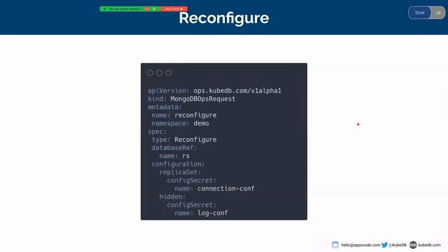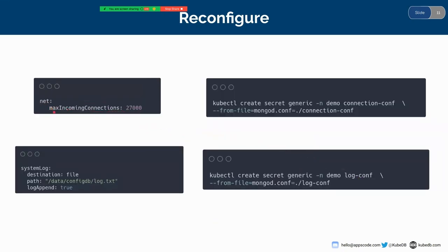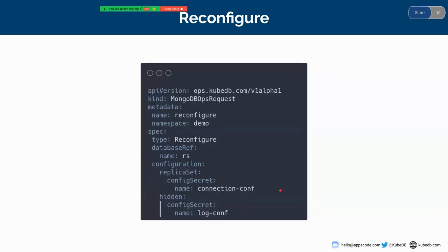Now I'm going to show you how to reconfigure the hidden nodes in a MongoDB replica set. The API version and kind are the same as previous. I will apply the reconfigure OpsRequest for MongoDB. The type is Reconfigure. The database reference is the same. This is the configuration I want to apply to the hidden nodes and the replica set members. Before applying, I need two secrets to be created in the cluster: one is connection-conf and one is log-conf. The connection-conf holds the configuration for max incoming connections set to 27000, and the log-conf holds the configuration for the system log path.